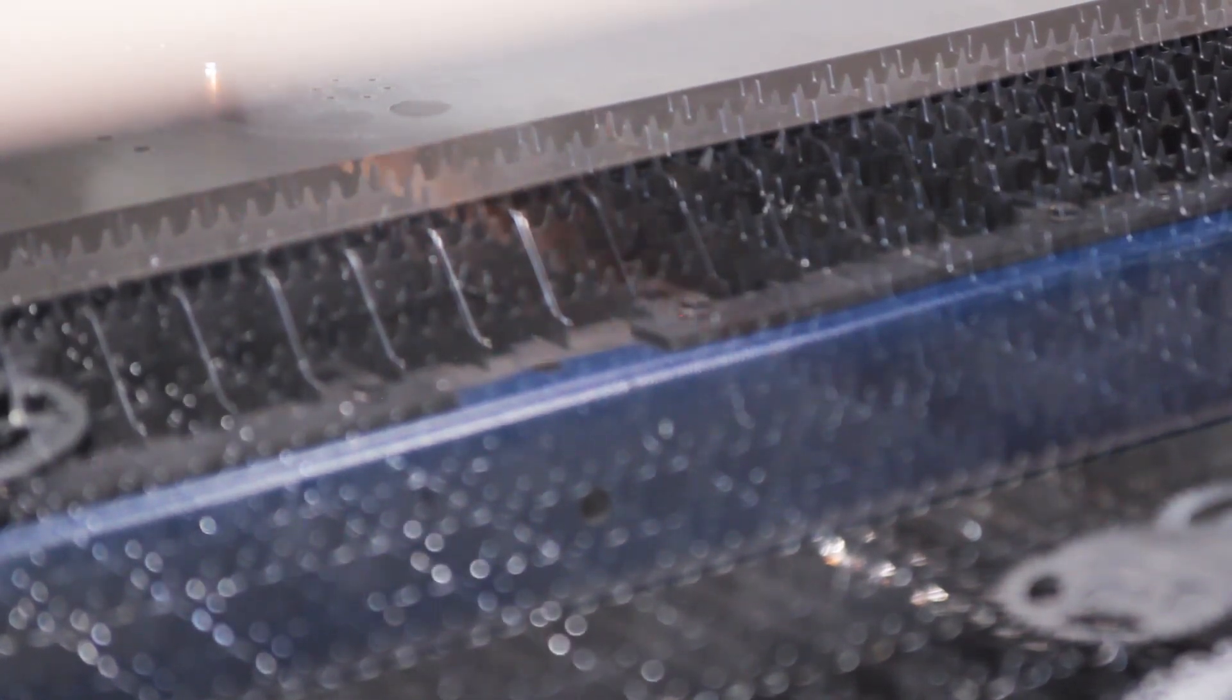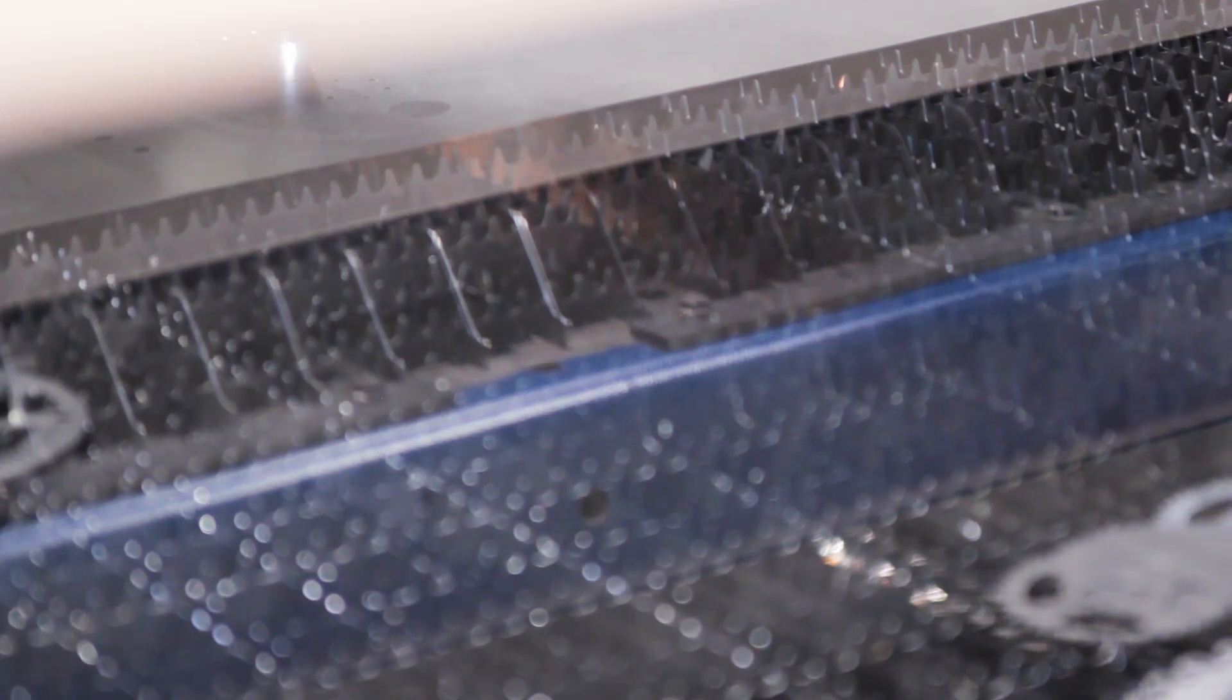The TruBend 7036 is geared towards extreme efficiency and high production numbers. With an electric drive system, it's not only energy efficient but also much faster than a typical hydraulic press.